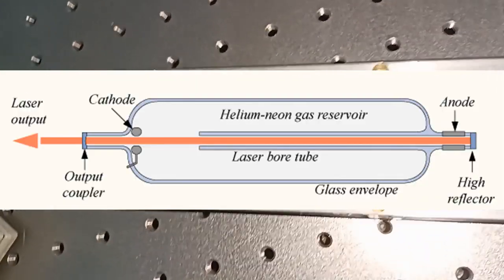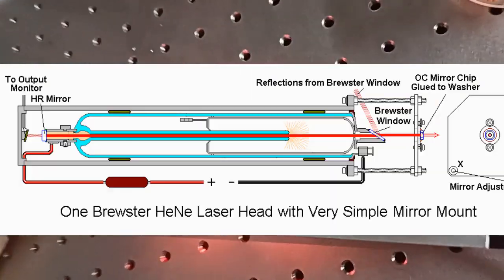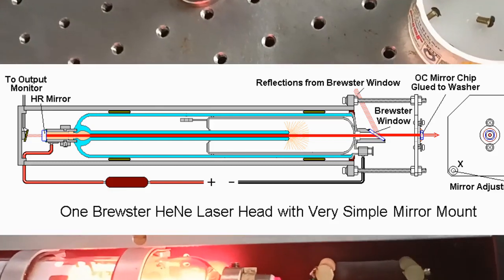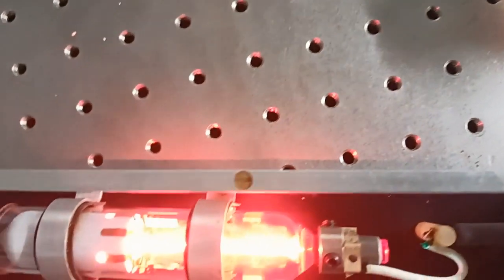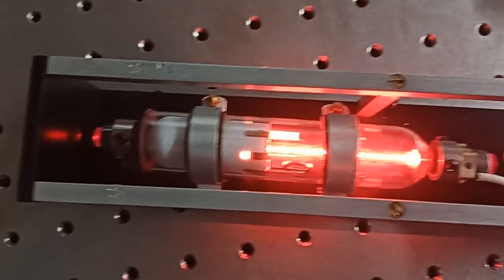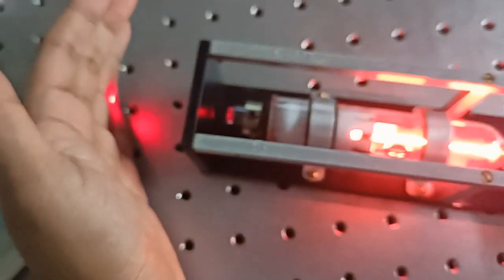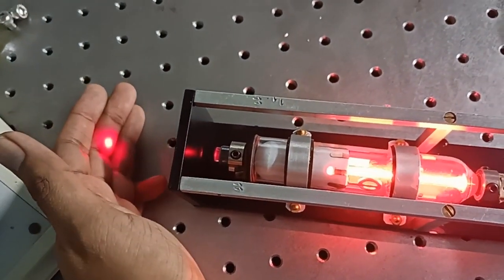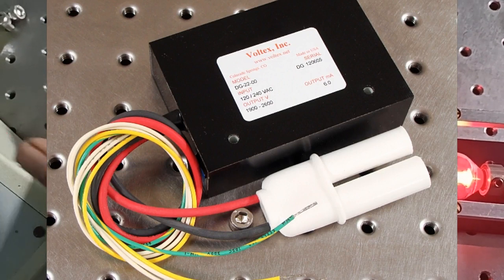Helium-Neon laser is a gas type of laser. The gain medium consists of 10 to 1 ratio of Helium and Neon. The total pressure inside the quartz glass tube is around 1 torr. This gas laser is electrically pumped using high voltage DC power source.